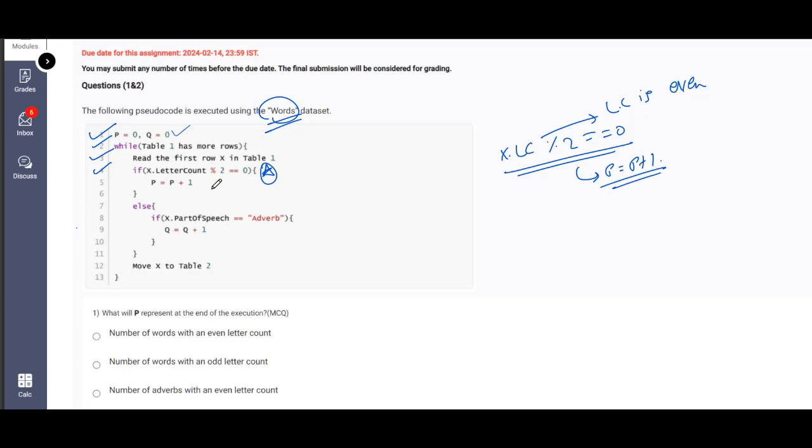If it is not an even number, that is if the letter count is three, five, seven, nine, any odd number, then we will be checking if the picked up word is an adverb. If it is an adverb, then we will be incrementing Q.